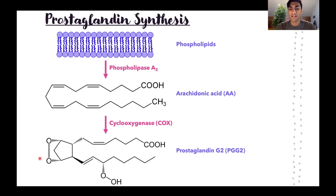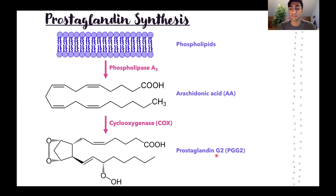To recap the synthesis of prostaglandins: we start with the phospholipid membrane, phospholipase A2 produces arachidonic acid, and then the enzyme COX acts on arachidonic acid to produce the first prostaglandin, PGG2.